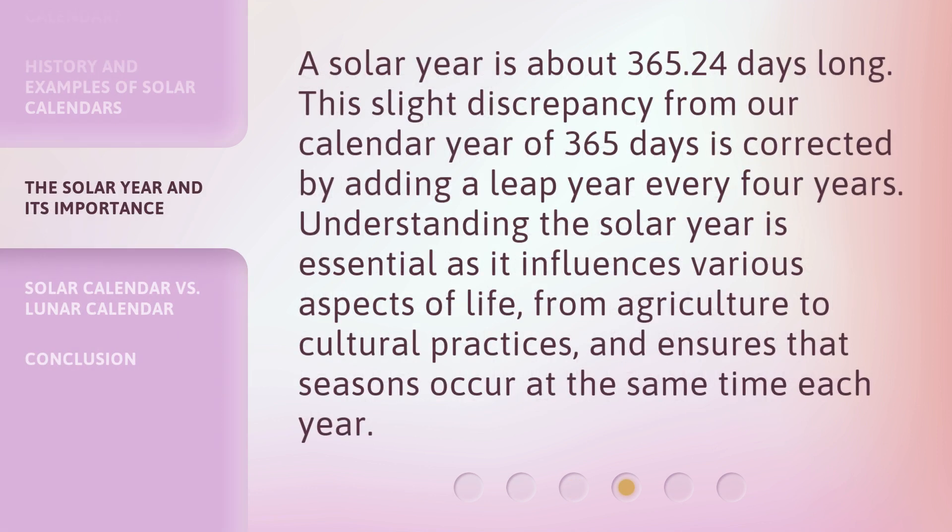A solar year is about 365.24 days long. This slight discrepancy from our calendar year of 365 days is corrected by adding a leap year every four years.